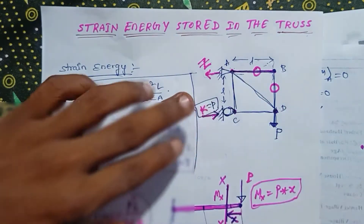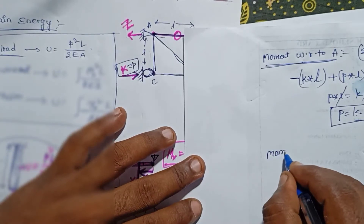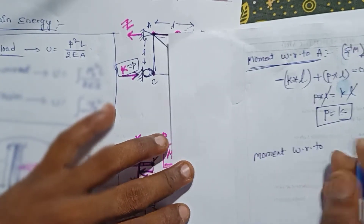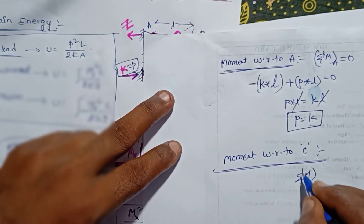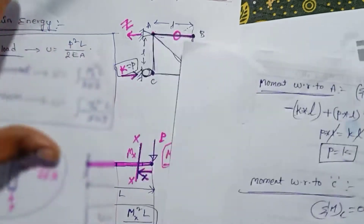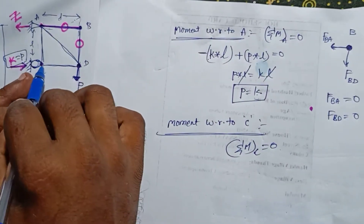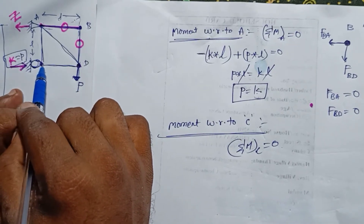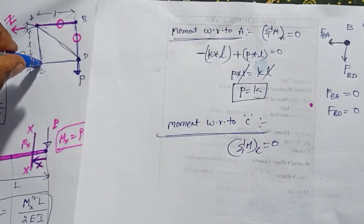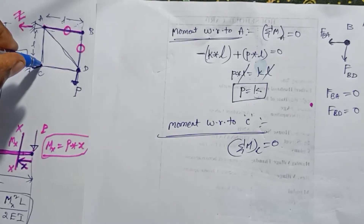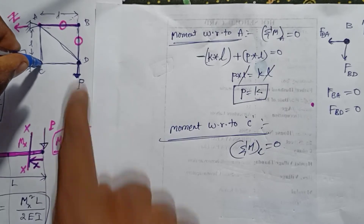Next, take moments with respect to point C. Using the equilibrium equation, sum of moments with respect to C equals zero. C is the pivot point. P is causing clockwise rotation about C, and we determine the perpendicular distance for each force.